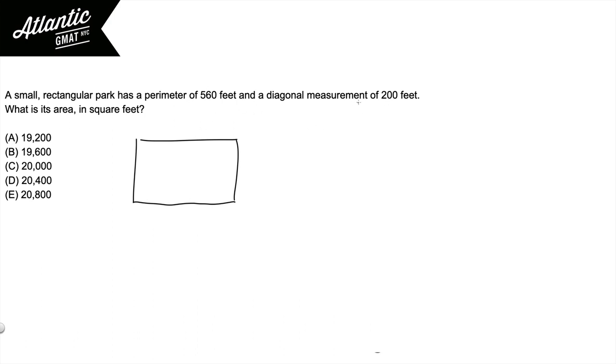And then we're going to populate the diagram with the information from the question. Let's pay attention to what things actually represent. The 200 is the diagonal. It's not the length. It's not the width. It's this guy. And the 560 is the perimeter.